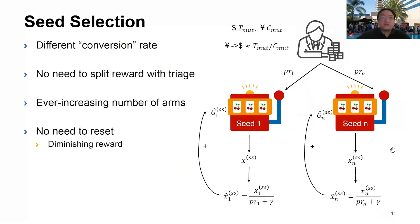Seed selection is similar. It only occurs in mutations, so the algorithm is slightly different. The conversion rate is different as they should not count the time and coverage incurred from generation and triage tasks. There is no need to split reward, and the number of seeds is ever increasing, so the algorithm needs to adapt to that. Finally, we know that the reward of the individual seed is a diminishing function, so there is no need to reset.